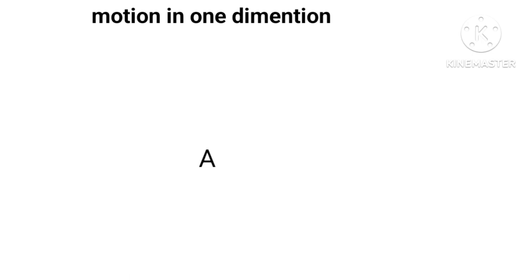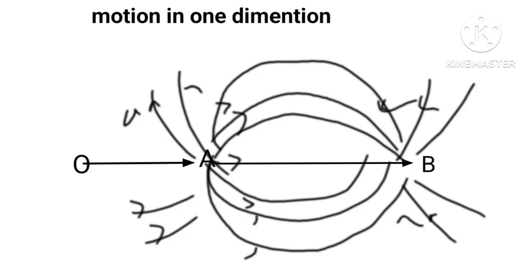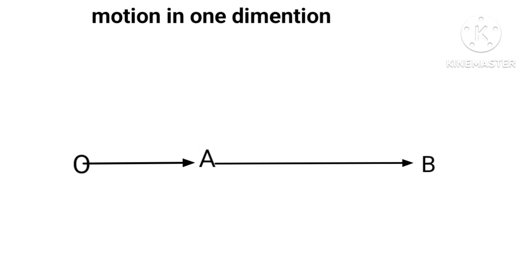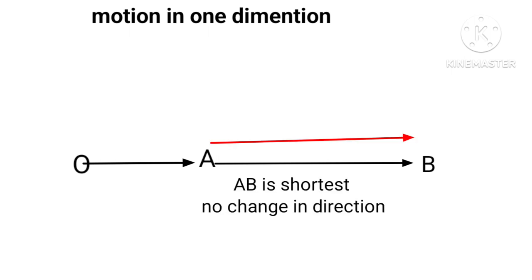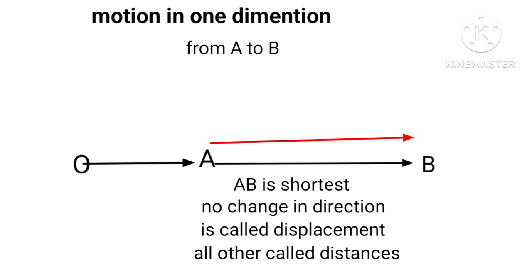Let a body at A moving with respect to point of reference O come to point B. The body can reach from A to B in many ways, but there is one and only one route from A to B, so AB is shortest with no change in direction. This is called displacement, whereas all other distances from A to B are called distance.